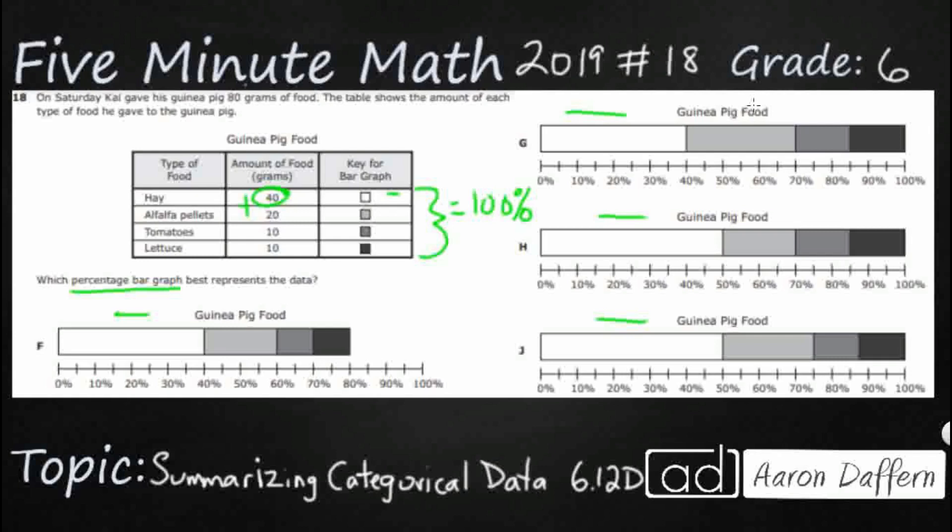So 40 plus 20 plus 10 plus 10, that is going to equal 60, 70, 80. So take a look at this. Notice this is going to be out of 80 so now what we need to do is we need to go ahead and turn all of these into fractions.